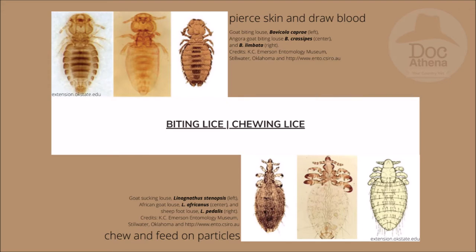In this slide, we also have the chewing lice. These chewing lice, as stated in their name, chew and feed on particles such as dirt or parts of the skin. We have the genus Linognathus for goat-sucking lice: Linognathus stenopsis on the leftmost part, the African goat louse or Linognathus africanus in the center, and the sheep foot louse or Linognathus pedalis on the rightmost side. Thank you to Casey Emerson Entomology Museum for these photos.